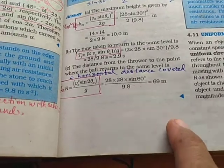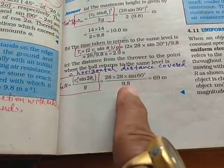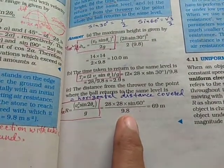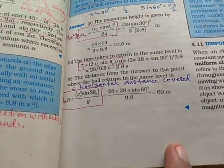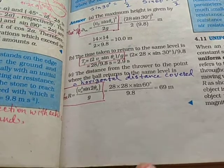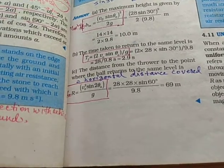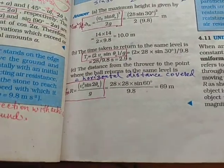It will cover a distance of 69 meters and the maximum height reached will be, we have calculated, 10 meters. And the time for which the projectile will remain in air is 2.9 seconds. Thank you and have a nice day.